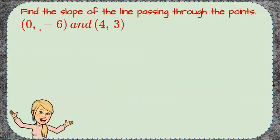Here's our challenge. You're asked to find the slope of the line passing through the points zero, negative six, and four, three.